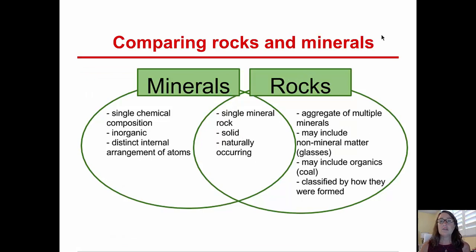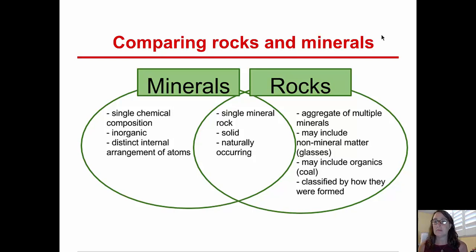In the next chapter we're going to be talking more about rocks, but just to give a little preview, let's compare and contrast minerals and rocks. On the left side, an individual mineral has a single chemical composition, is inorganic, and has a distinct internal arrangement of atoms. Minerals and rocks are commonly solid and naturally occurring, and some rocks are single-mineral rocks, such as dunite, which is made up only of olivine. Rocks, on the other hand, are aggregates typically of multiple minerals. They may include other non-mineral matter such as glass, like obsidian, or organics, like coal. Rocks tend to be classified by how they were formed into categories of igneous, sedimentary, and metamorphic rocks.